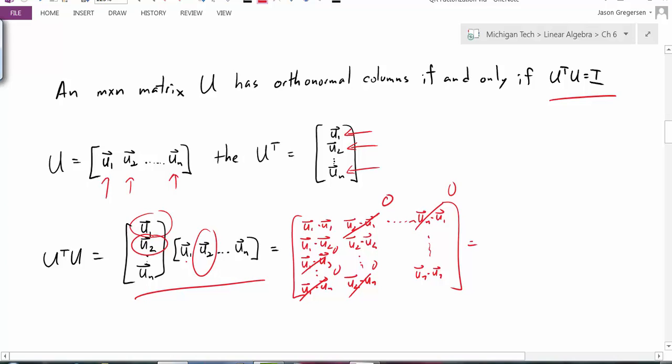The only ones that would not be 0 are the diagonal entries, because here we would have U1 dotted with itself. And U1 dotted with itself would give us the magnitude of U1 squared. But these are orthonormal, so they have a length of 1, and 1 squared is 1. So the result here is a whole bunch of 1s on the diagonal and a whole bunch of 0s everywhere else. And so what we can see is this is going to look like an identity matrix. In fact, we're going to get an N by N identity matrix.